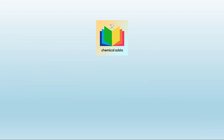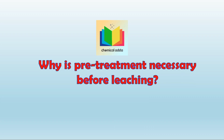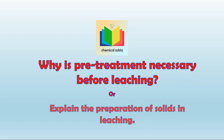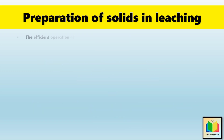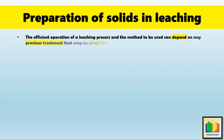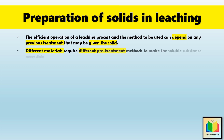Why is pre-treatment necessary before leaching? Or, explain the preparation of solids in leaching. The efficient operation of a leaching process and the method to be used can depend on any previous treatment given to the solid. The effectiveness of leaching often depends on how the solid is prepared before the process, because the right technique for pre-treatment can drastically reduce leaching time and improve efficiency. Different materials require different pre-treatment methods to make the soluble substance accessible to the solvent.